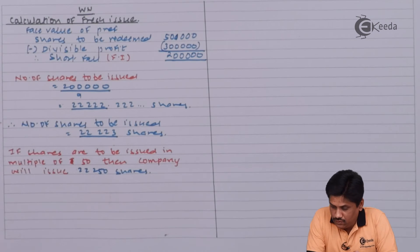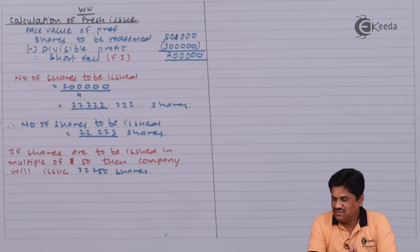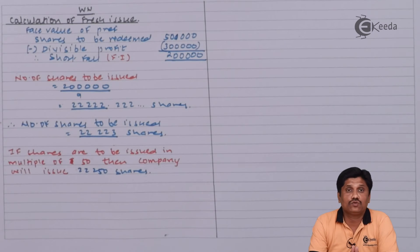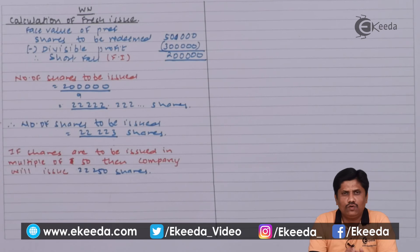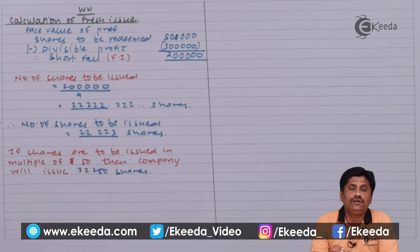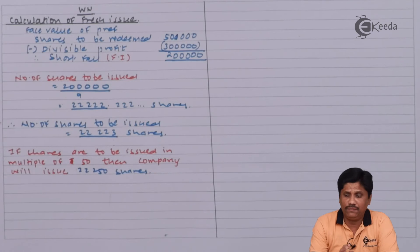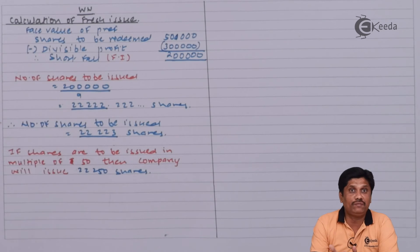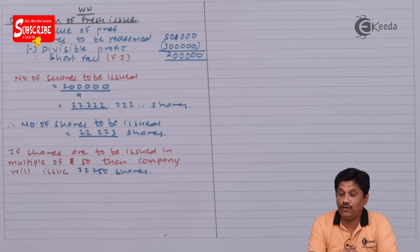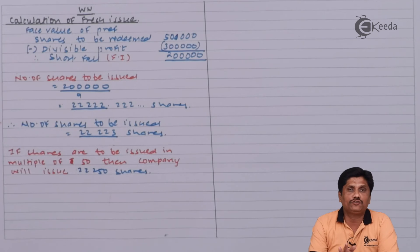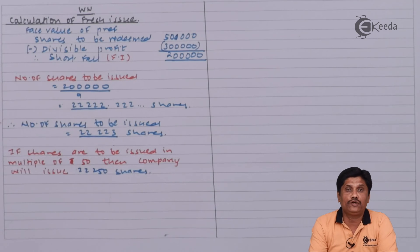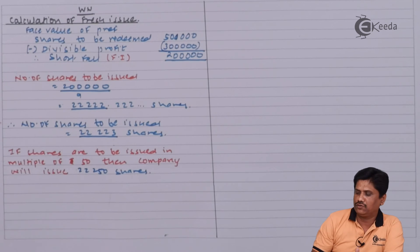This kind of question may arise in your mind — sir, is this expected in the exam? The answer is no, but this question is helpful to understand the concept and basics of this topic. The key concept is that you replace the preferential capital, and the shortfall of two lakhs is raised through a fresh issue. Dividing by the face value of nine rupees gives 22,222.222, which rounds up to 22,223 shares. If issued in multiples of 50, it becomes 22,250 shares.